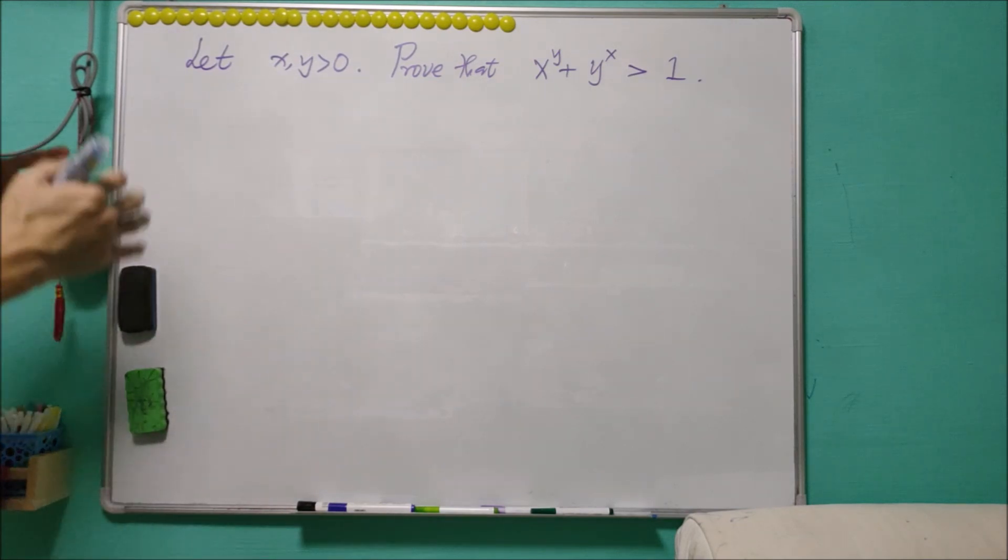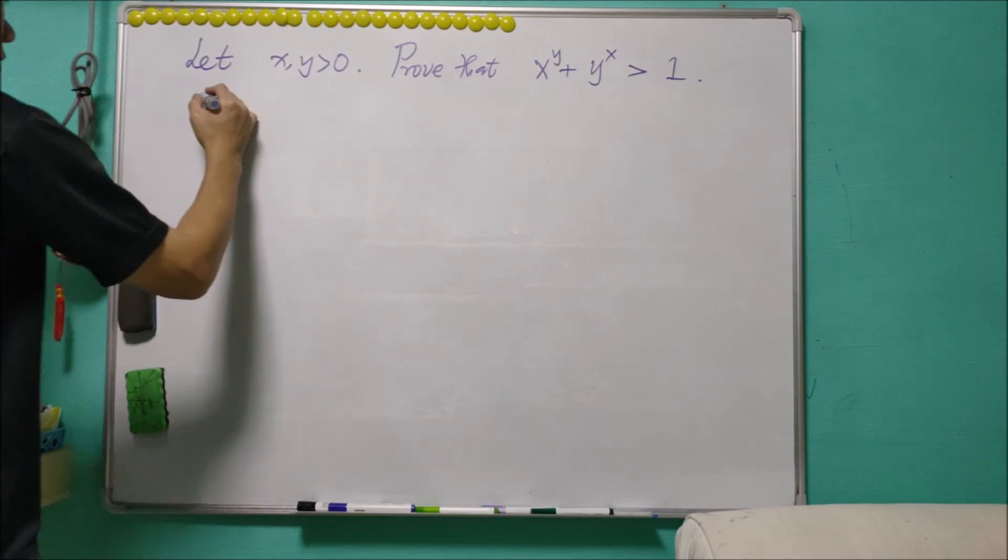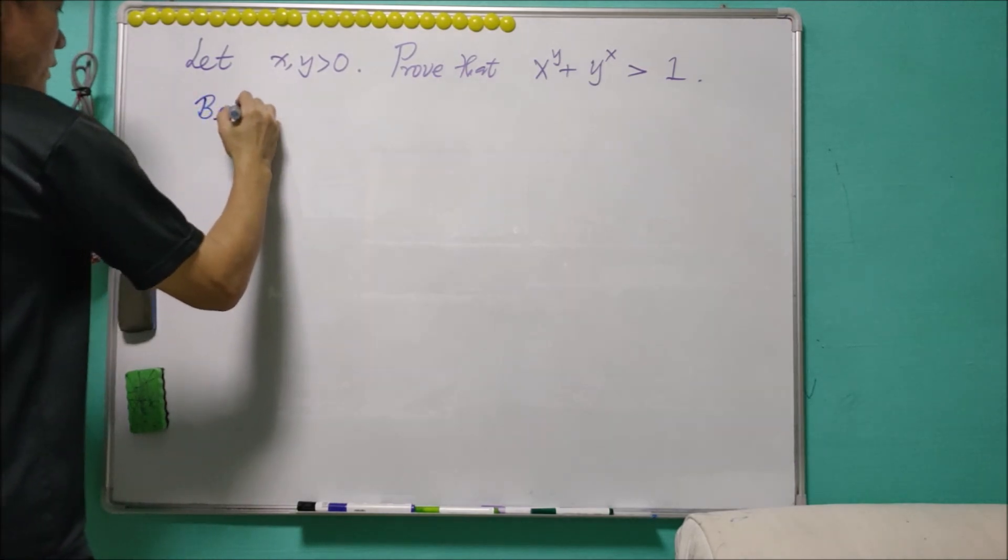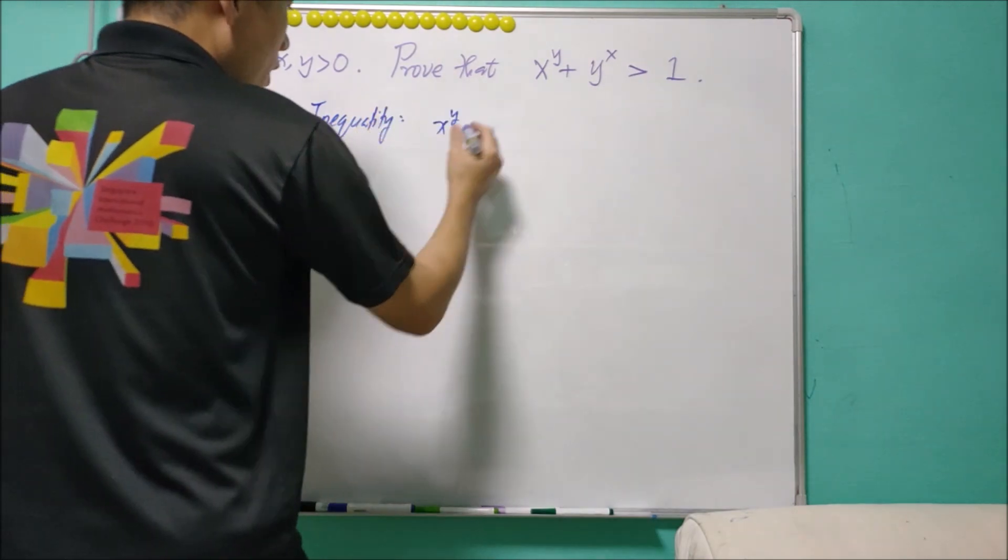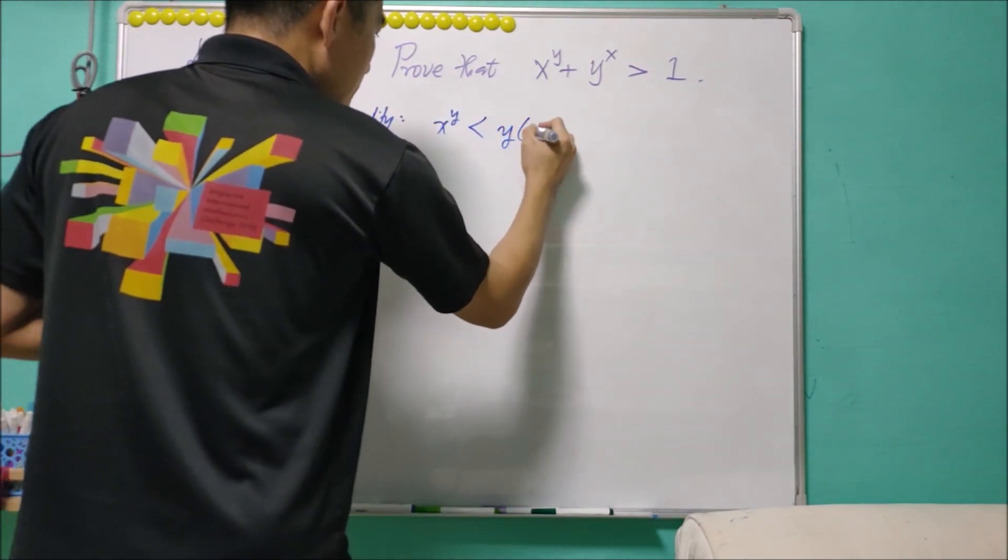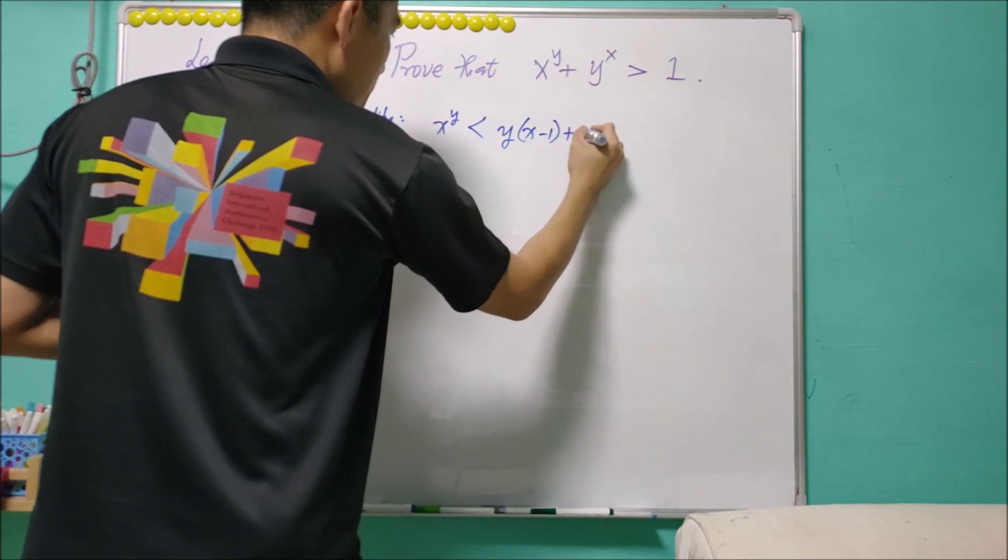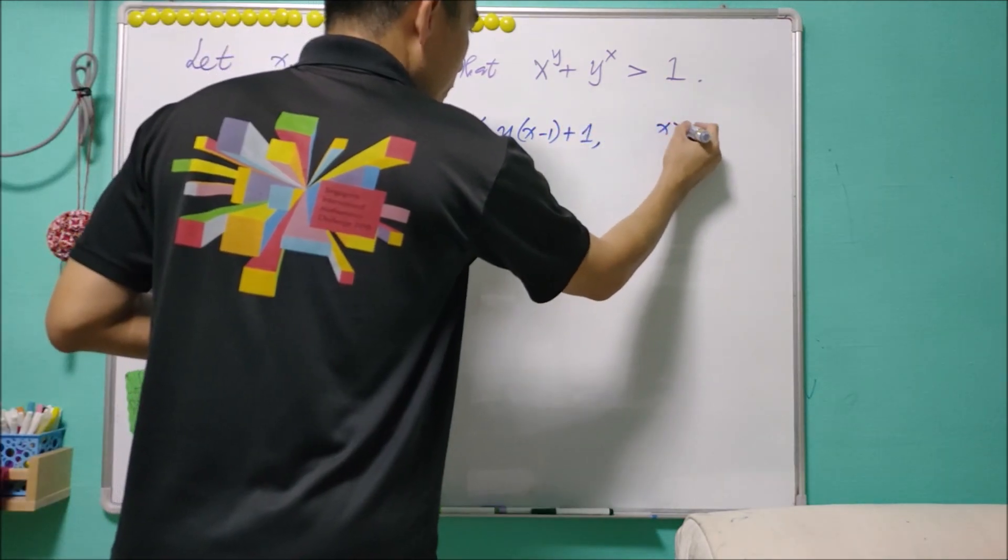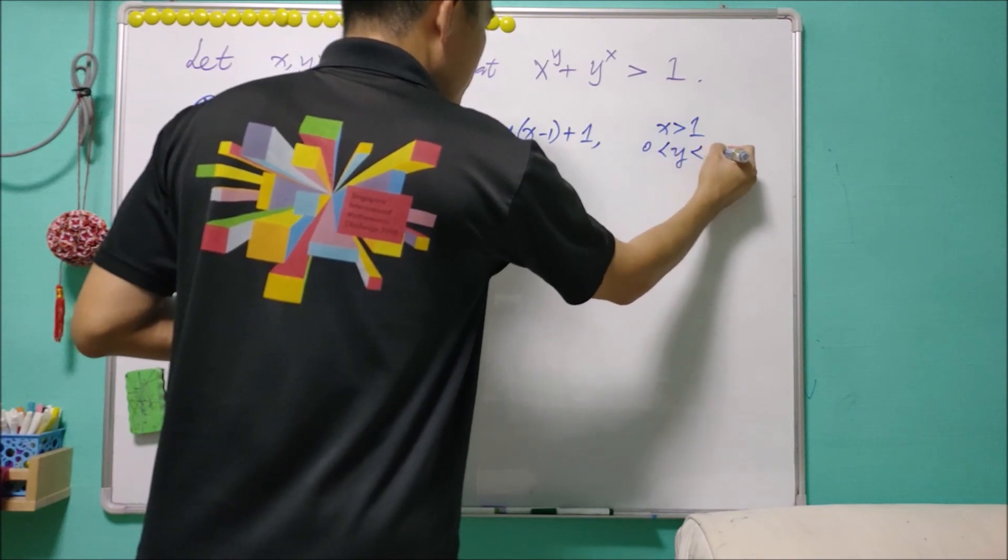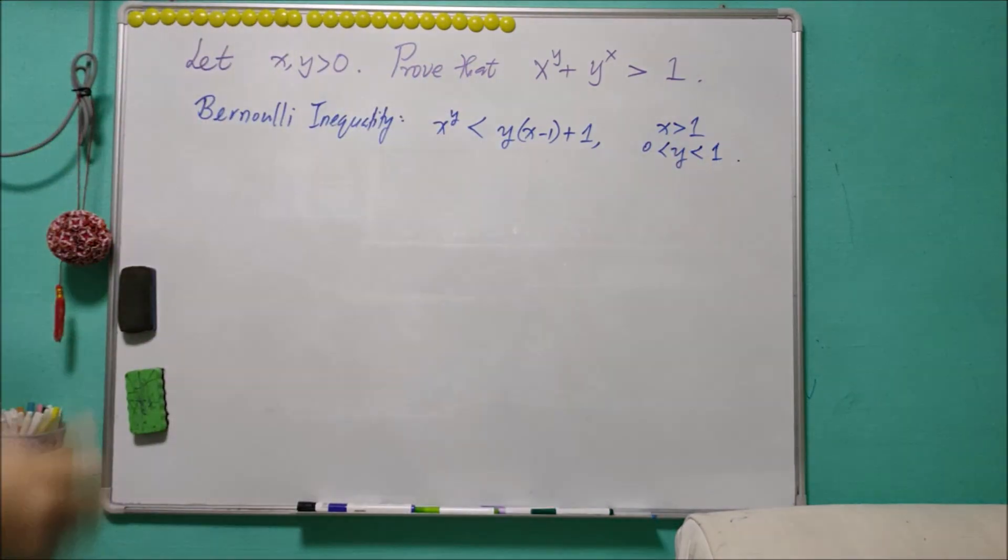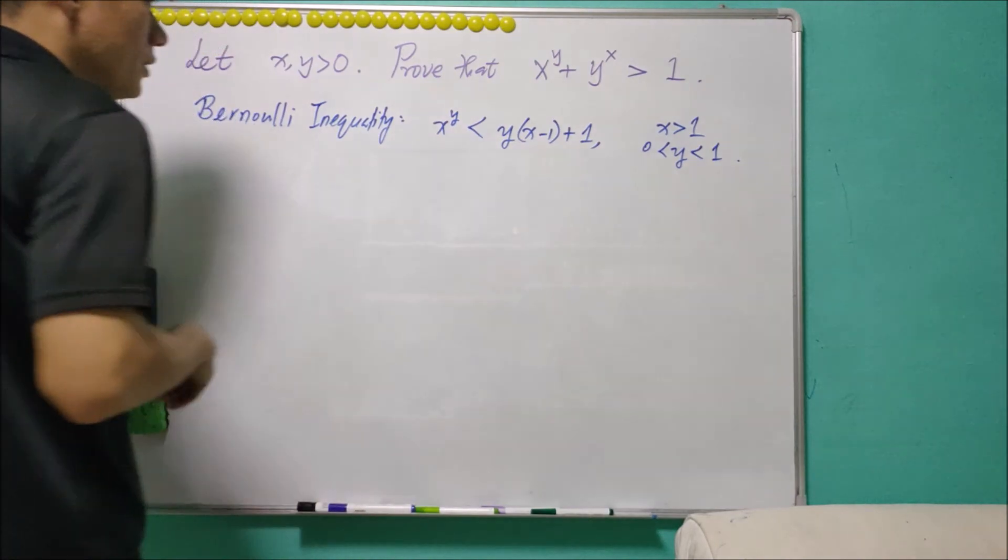And before that, we need to use this inequality that's called Bernoulli inequality. x to power y is less than y times x minus one plus one if x is more than one and y is in between zero and one. And I'm going to show this inequality now.